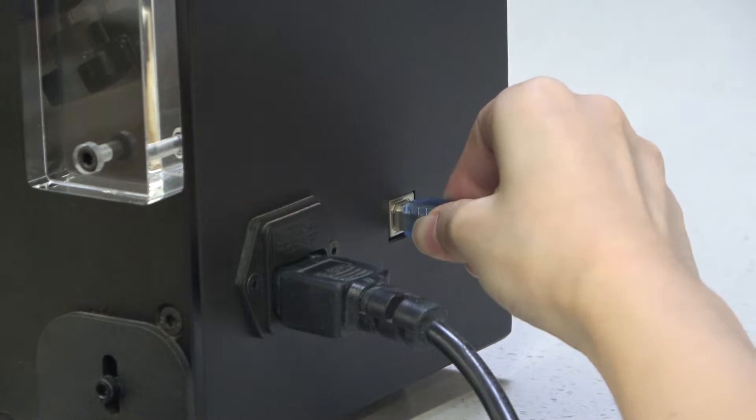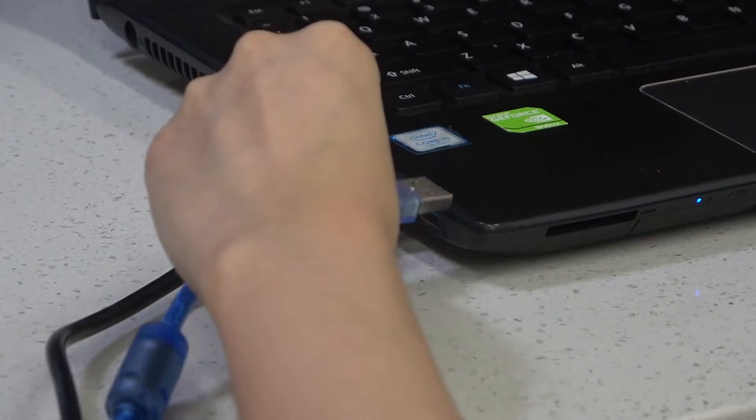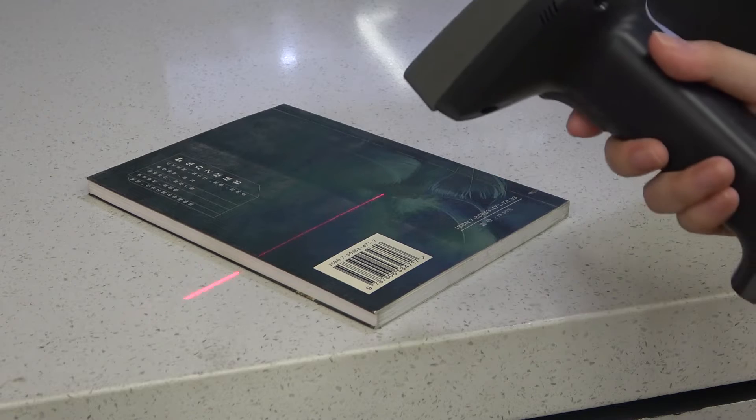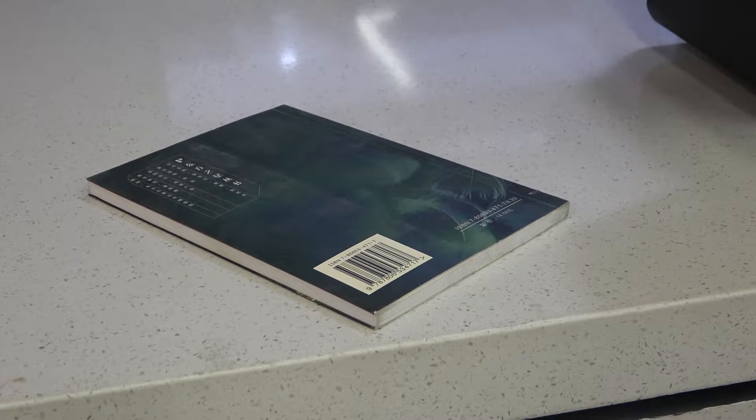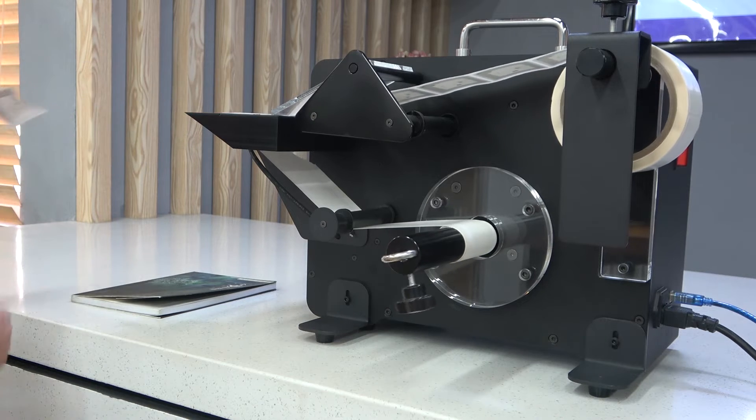After installing the roll label, you can connect to the computer through the USB data cable. As required, important documents can also be written into the tag, and the tag can be automatically stripped at the same time.